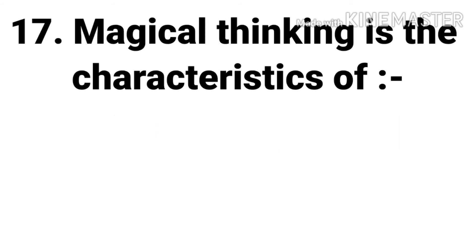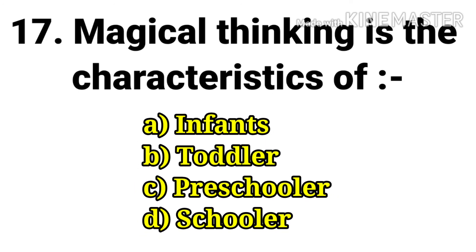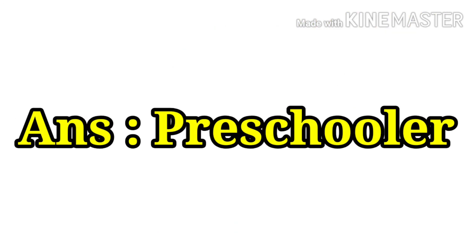The next question: magical thinking is a characteristic of — options are infants, toddler, preschooler, and schooler. The answer is preschooler.